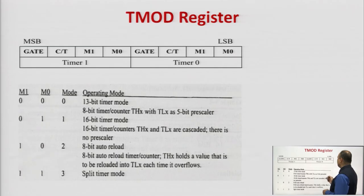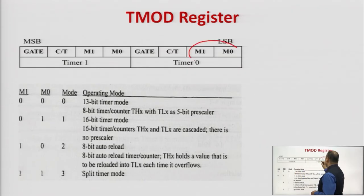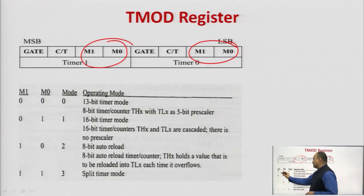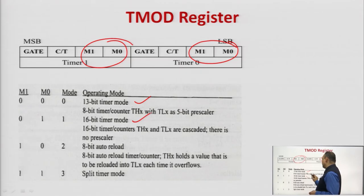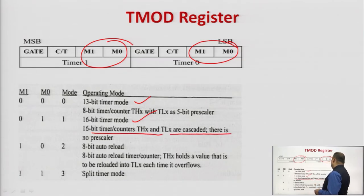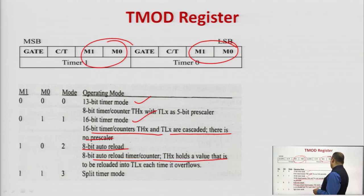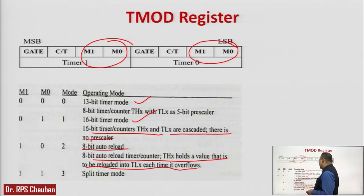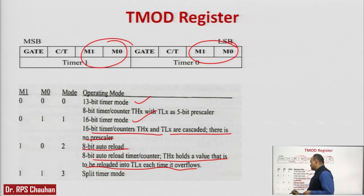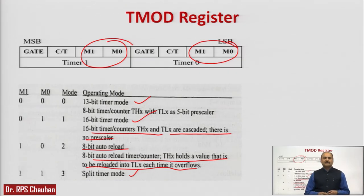With the 2 bits M0 and M1 of the TMOD register, we can select the operation mode. If both M1 and M0 are 00, that is mode 0, which is 13-bit timer mode. If it is 01, it is 16-bit timer mode, where THx and TLx are cascaded with no prescaler. If it is 10, it is 8-bit auto-reload mode, where THx holds a value to be loaded into TLx each time it overflows. If M1 and M0 are both 1, it is mode 3, the split timer mode. This is the structure of the TMOD register for selecting timer 0 and timer 1 modes.